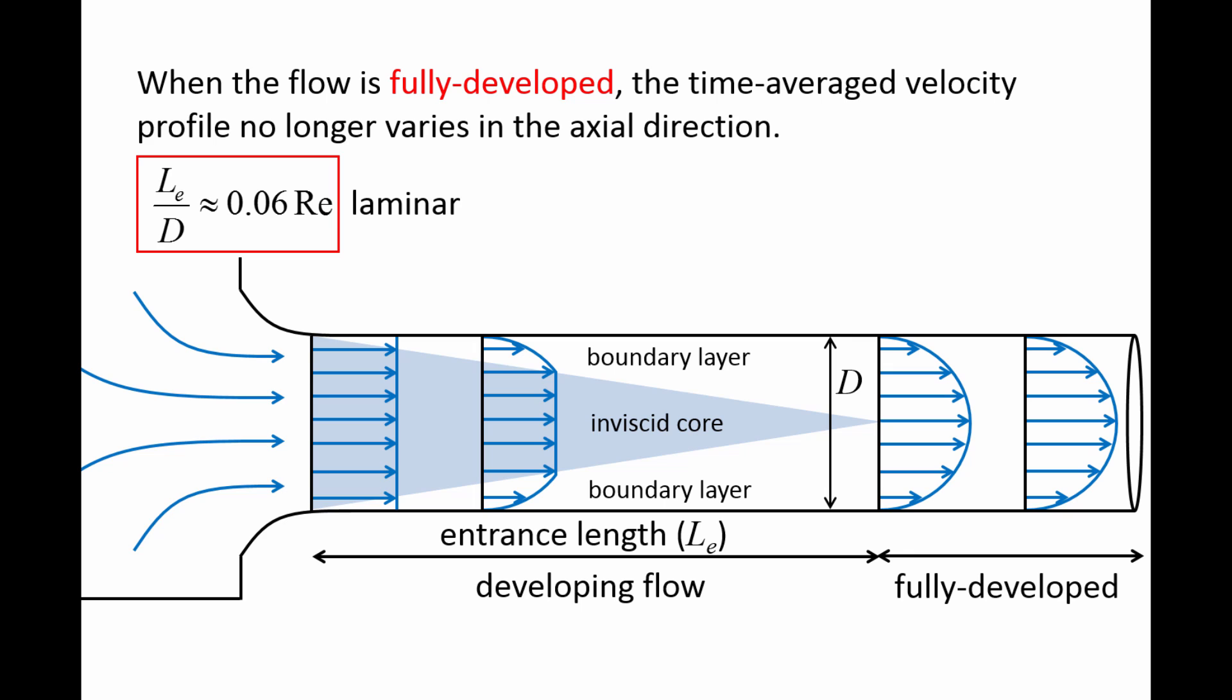For turbulent flows, where the Reynolds number is greater than 4000, one formula for calculating the entrance length in circular pipes is Le over D approximately equal to 4.4 times the Reynolds number to the one-sixth power.